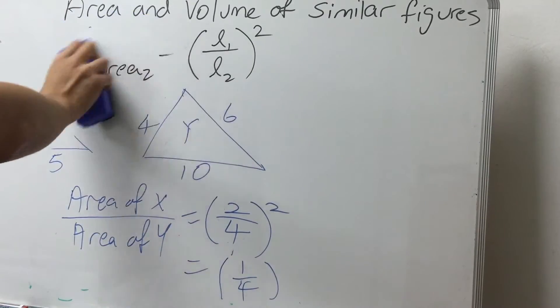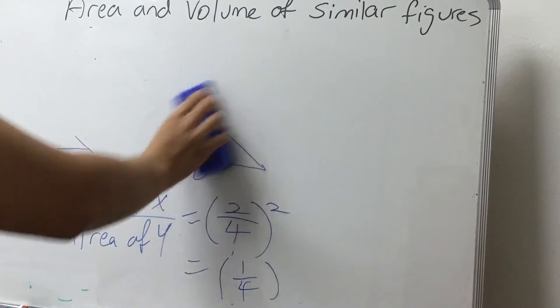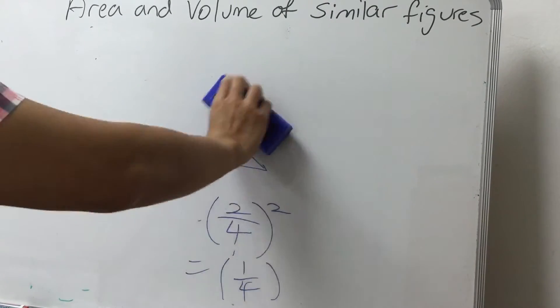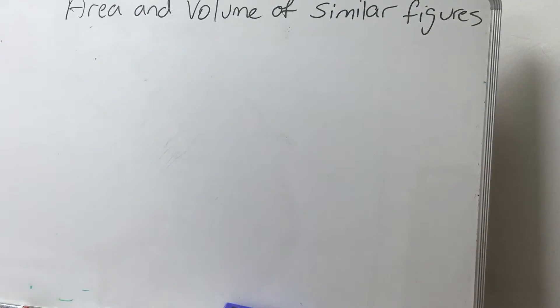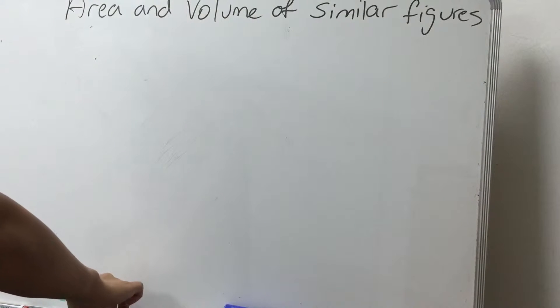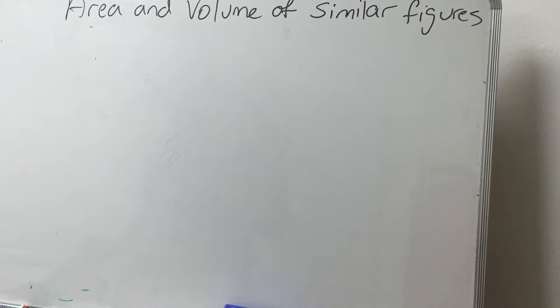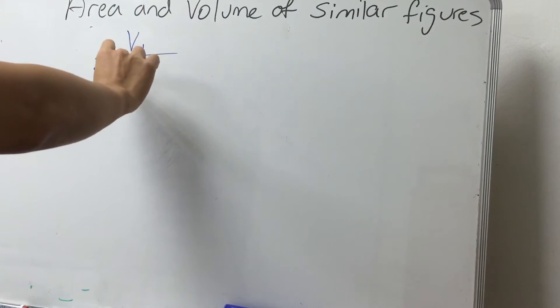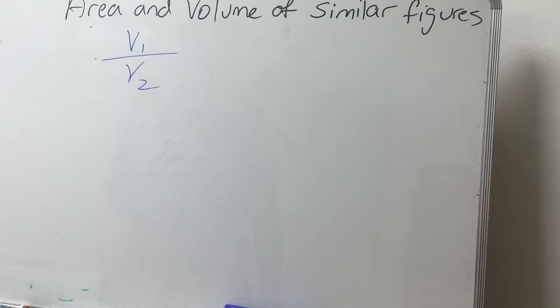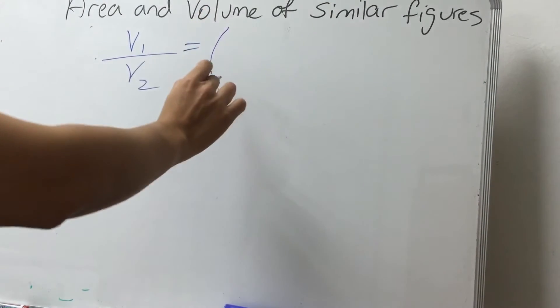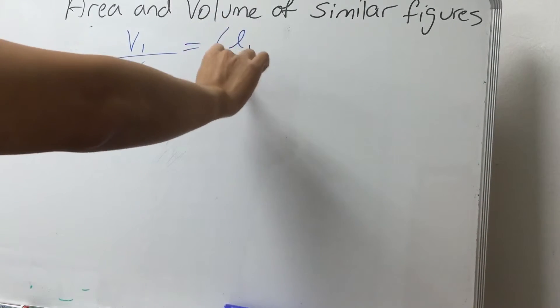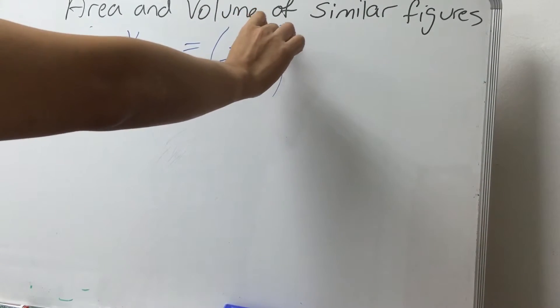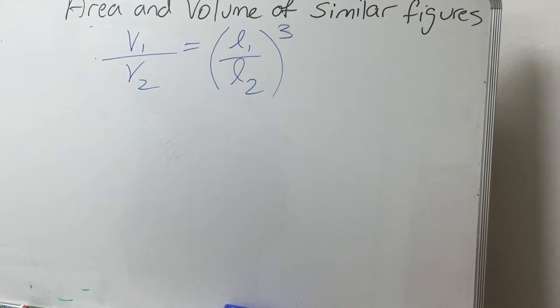Next, we will see the volume of similar figures. So as you have seen just now, for the area of similar figures, they are given by Area over Area equals to side over side squared. For volume, Volume₁ over the Volume of the second figure will be given by the length of the first figure over the length of the second figure cubed.